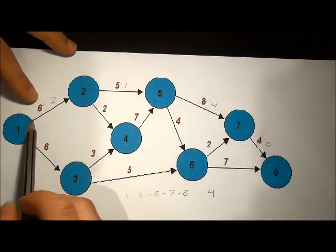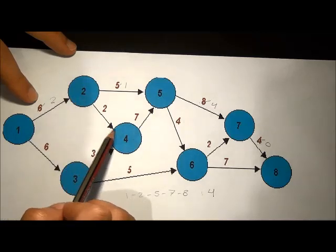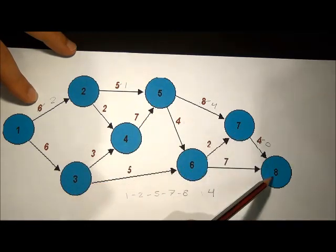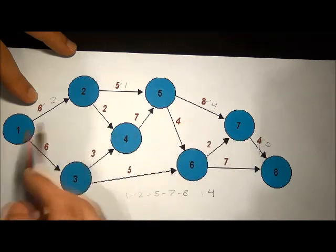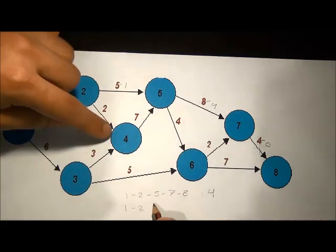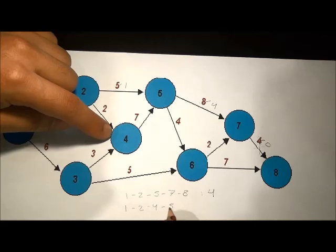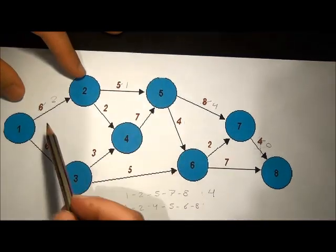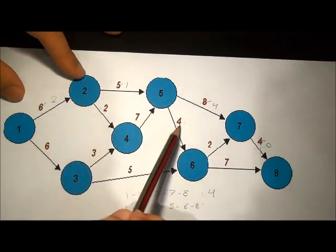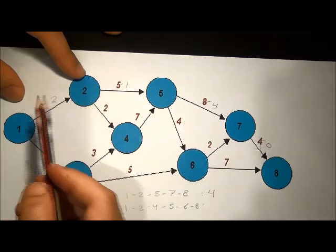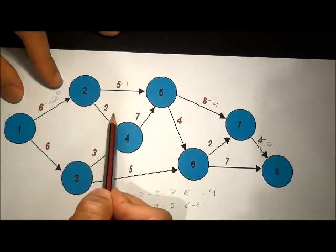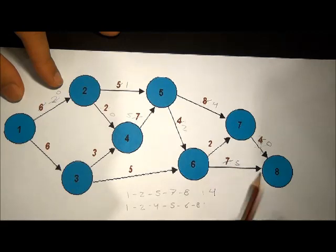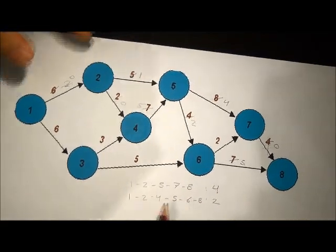Now let's go with the next route: 1-2-4-5-6-8. We have capacities 2, 2, 7, 4, 7. The minimum is 2, so we pump 2. This leaves remaining capacities of 0, 0, 5, 2, and 5. Total so far: 4 plus 2 equals 6.